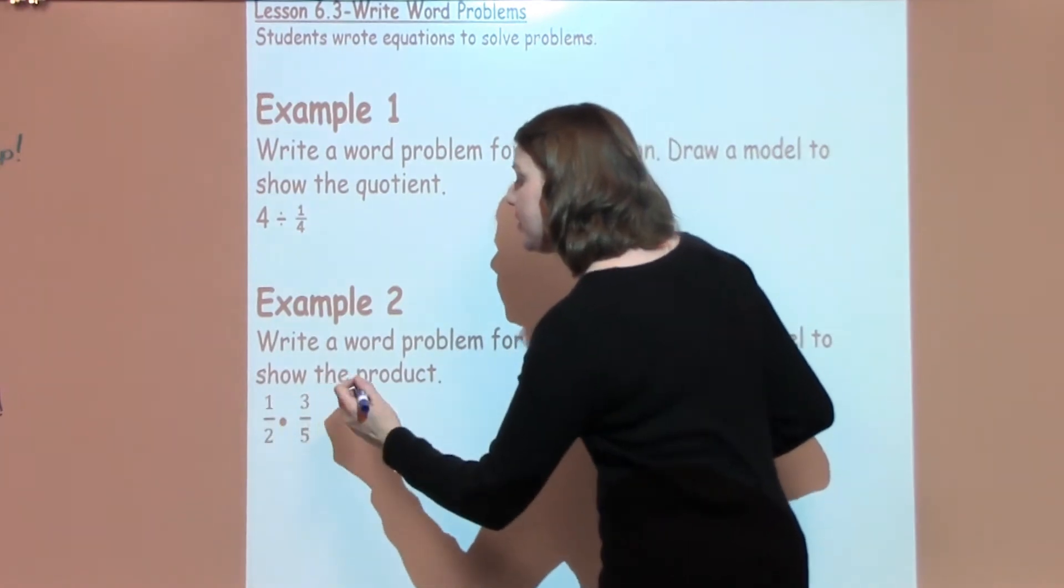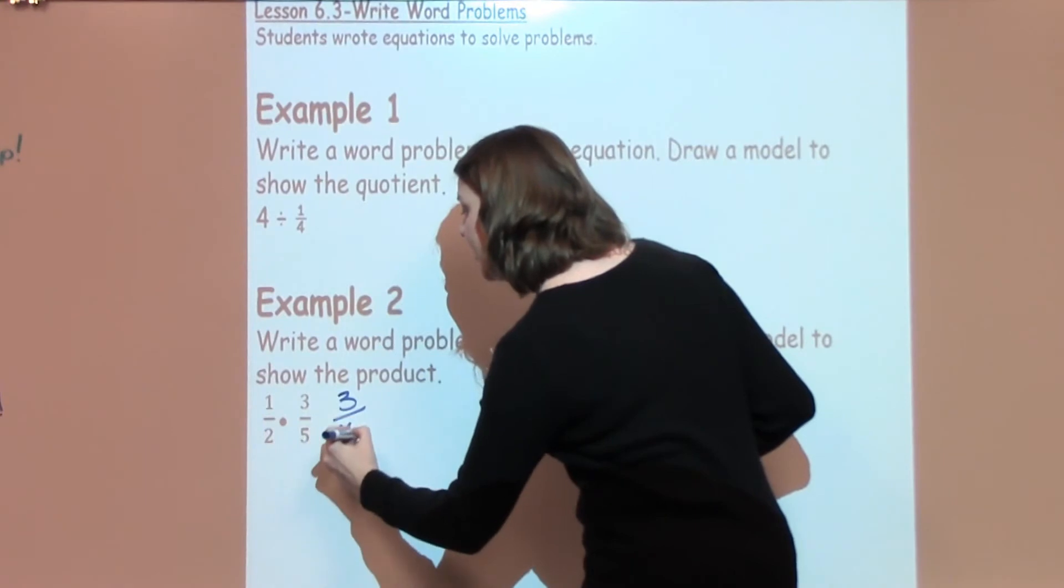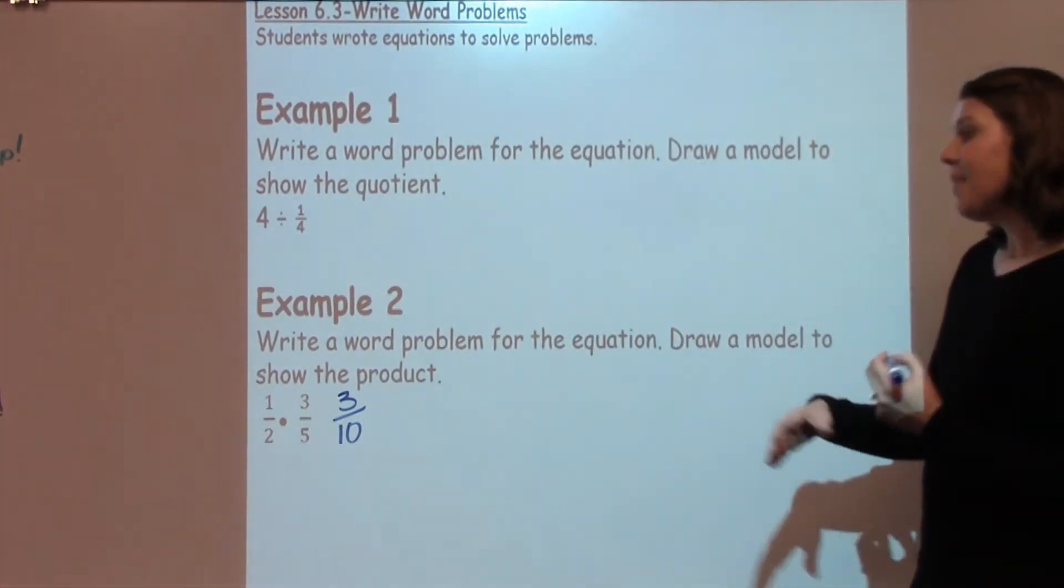So when I take 1 times 3, I get 3. When I take 2 times 5, I get 10.